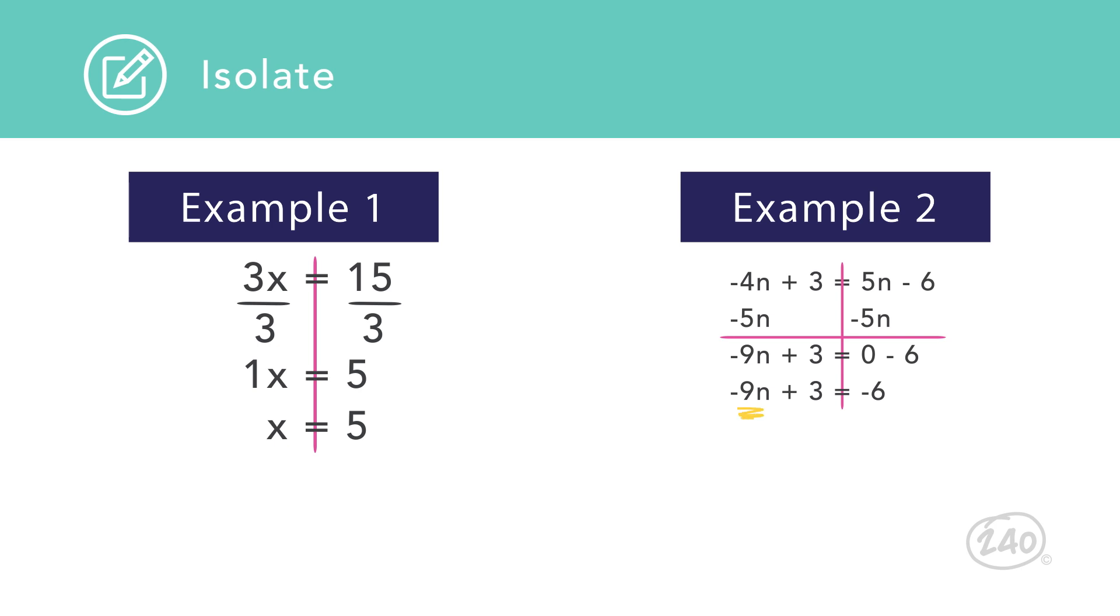It doesn't matter which side of the equal sign the variable ends on. Some people prefer to always have the variable on the left and move the variable term from the right to the left. Others prefer to keep the coefficient in front of the variable positive and move the smaller variable term to the side of the larger. Either approach leads to the right answer, so choose the one you like best.